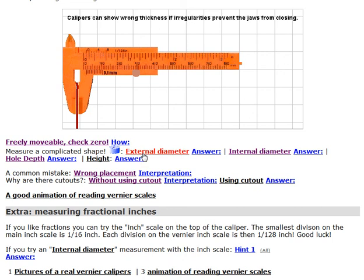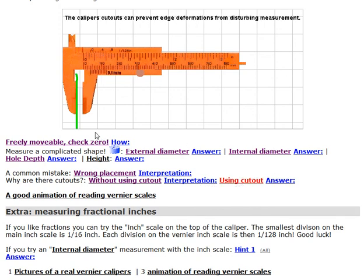So these cutouts here are used so that if I want to use the cutout, I put the thing in so that the part that has the constant thickness is here, and the part that's a little bit deformed is in the cutout. Then when I close this, it will go completely onto the edge here and give me a proper measurement.